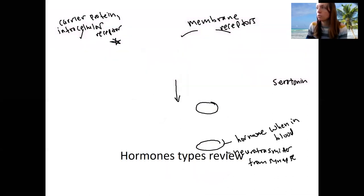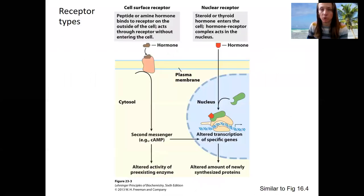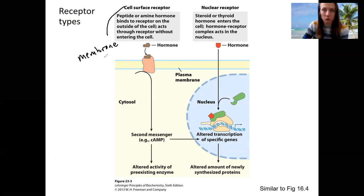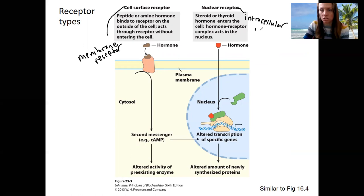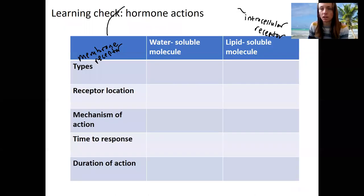Here is a quick review with some nice images showing the two different types of receptors: cell surface receptors (same as membrane receptors) and nuclear receptors (intracellular receptors that go into the nucleus). Steroid and thyroid hormones use nuclear receptors. Pause your video and complete the learning check.